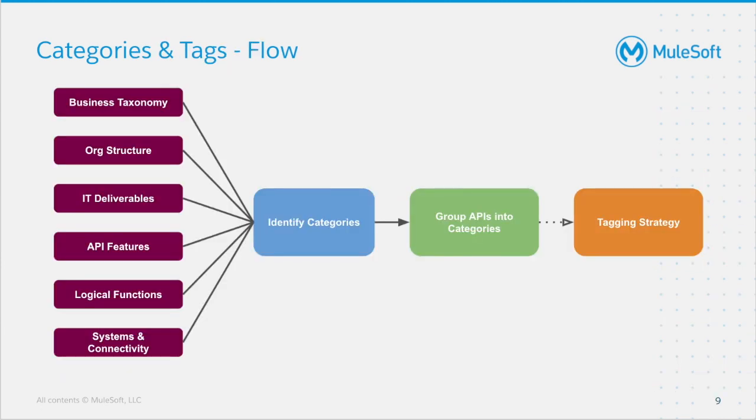In order for you to further understand categorization, let's pretend I am an exchange admin who wants to categorize my APIs to make them easily discoverable. How would I do that? Well, this is the approach I am taking. I will use this flow diagram to help me. First, I will use the top-down approach to identify the categories and create categories in exchange. These category names can then be used to group the APIs into categories by API developers and owners. This leads to an enhanced search experience for the exchange consumers to search and find relevant APIs quickly.